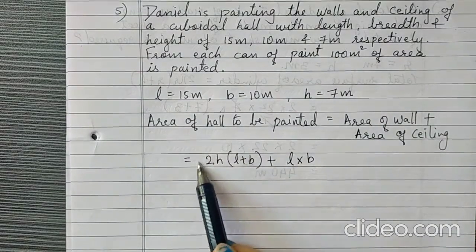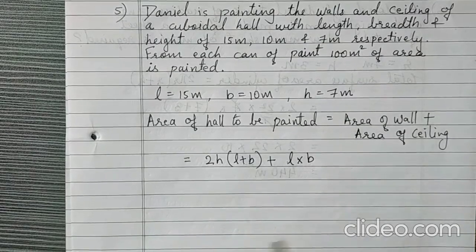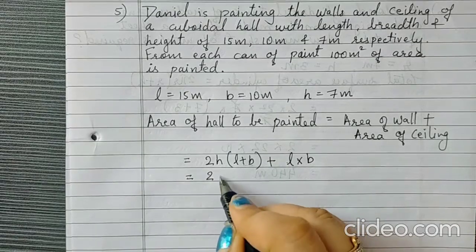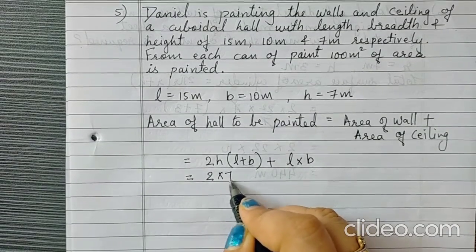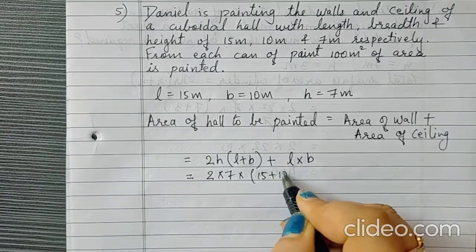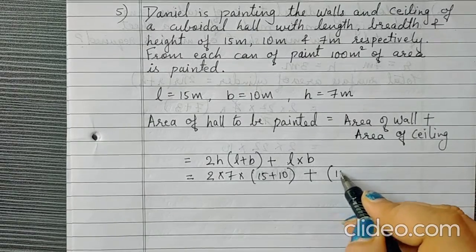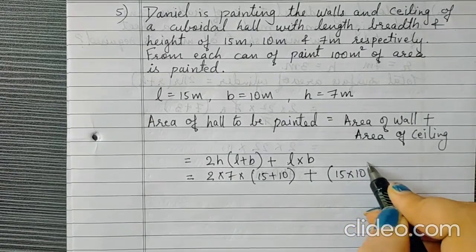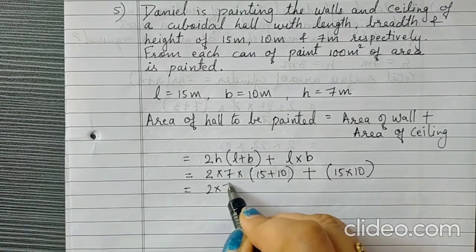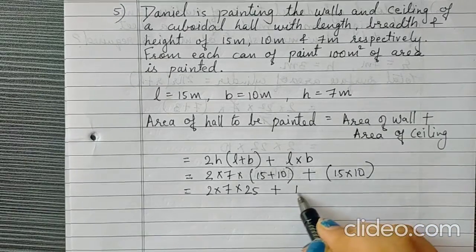And this will be cuboidal in shape. So, it will be 2H into L plus B. Let us put up the values. 2 into H is 7 into L plus B means 15 plus 10, and here plus L into B it is 15 into 10. So, this is 2 into 7 into 25 plus 150.